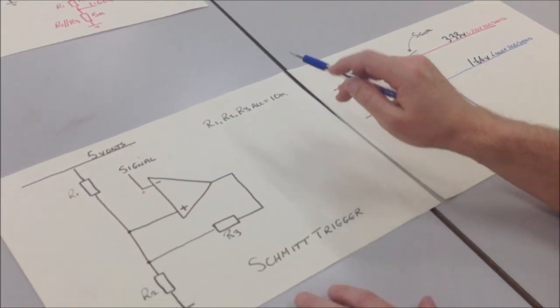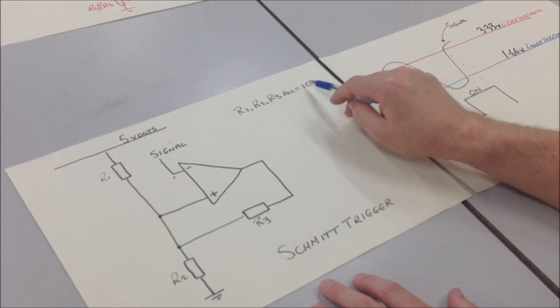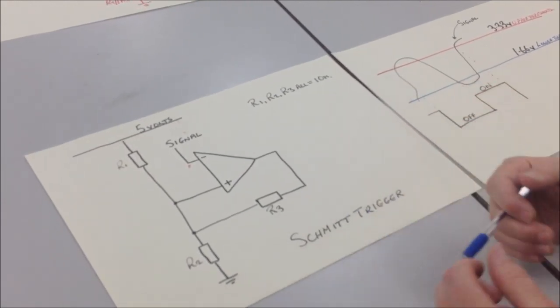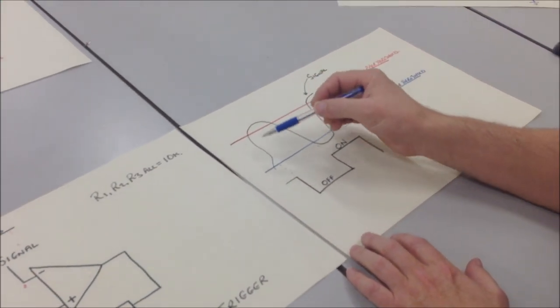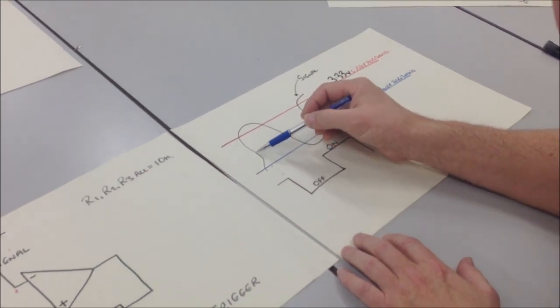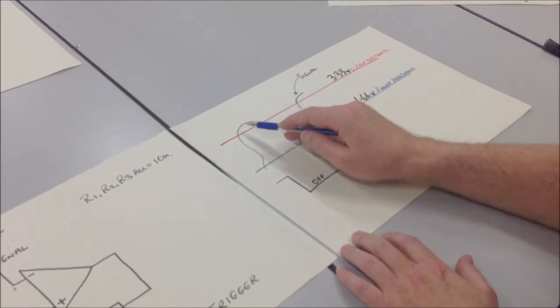Now to make this nice and easy, I've made R1, R2 and R3 all 10k. So that makes the Ohm's Law part of it relatively easy to understand. And we're going to start from this point here, where the signal is travelling towards the upper threshold here.